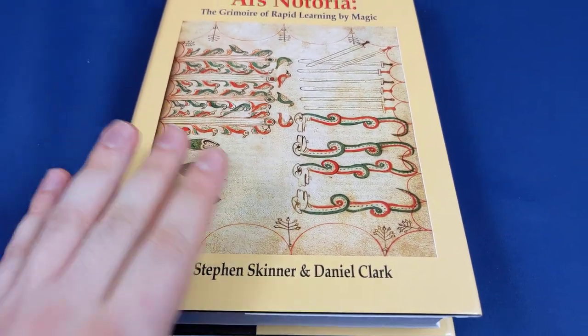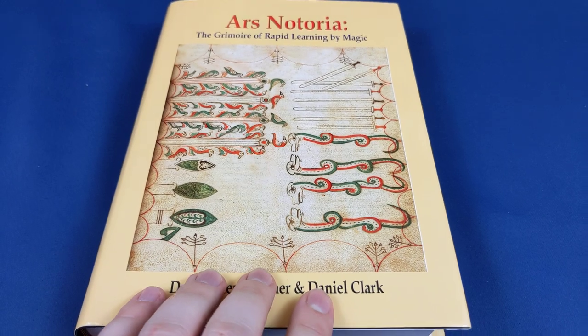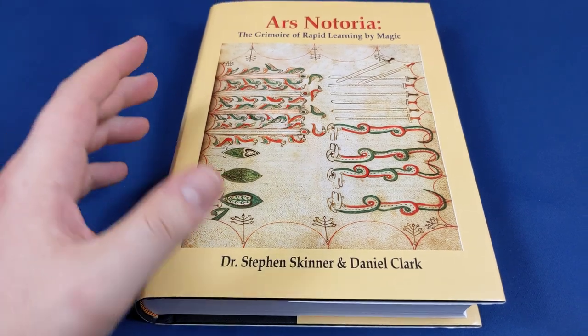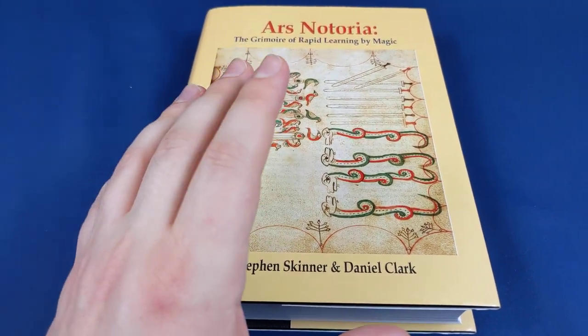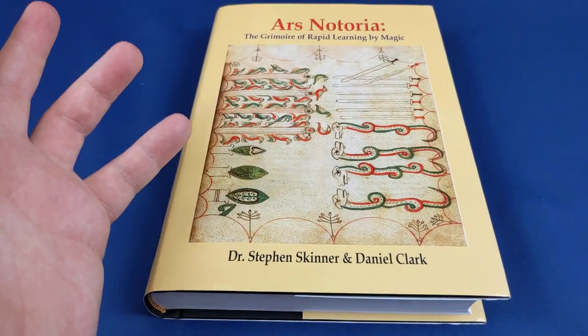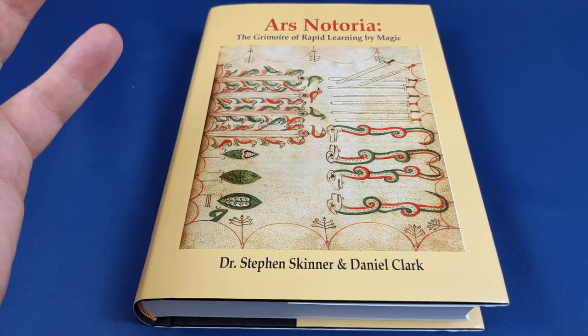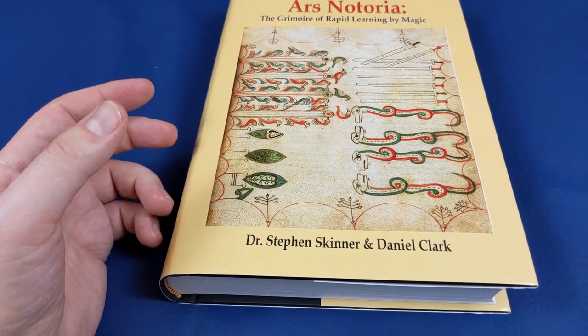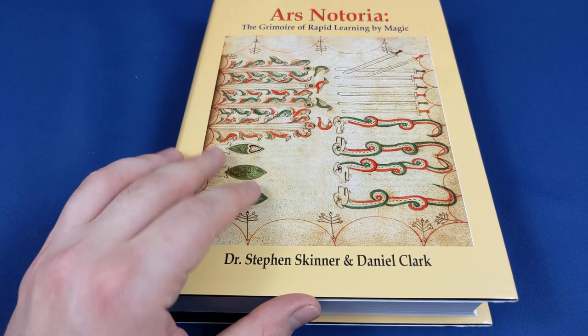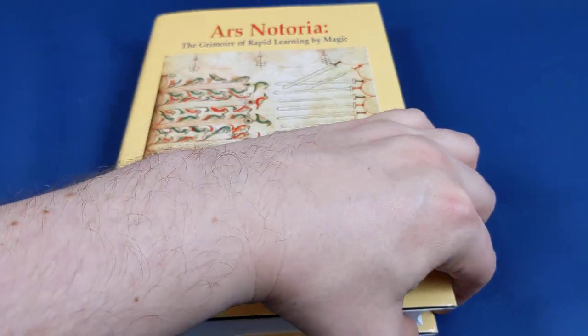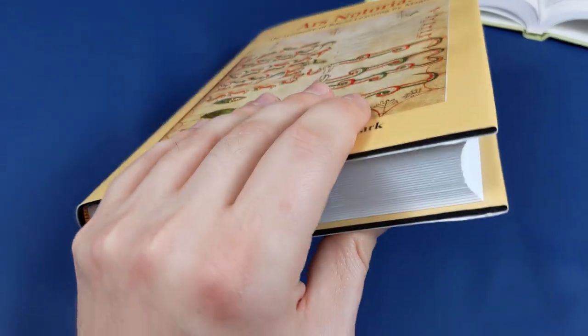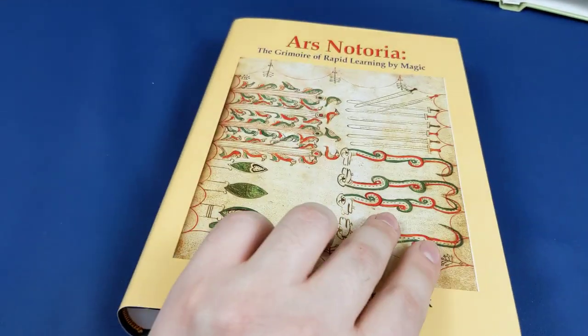Dr. Stephen Skinner and Daniel Clark have got together and have put all of their knowledge and scholarship into researching all the different manuscripts of the Ars Notoria that they've been able to find. And they've come up with this first book of a set of two.